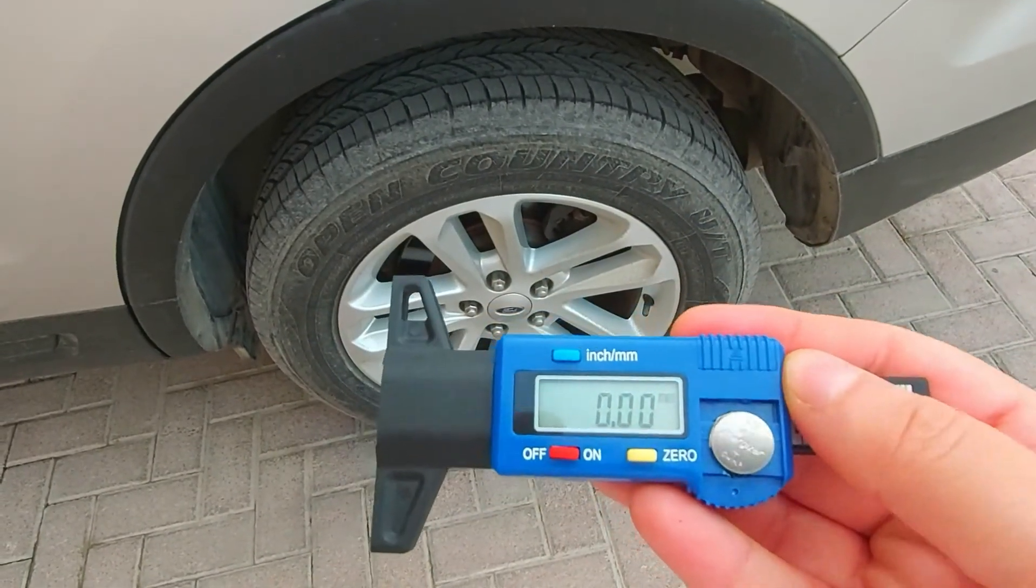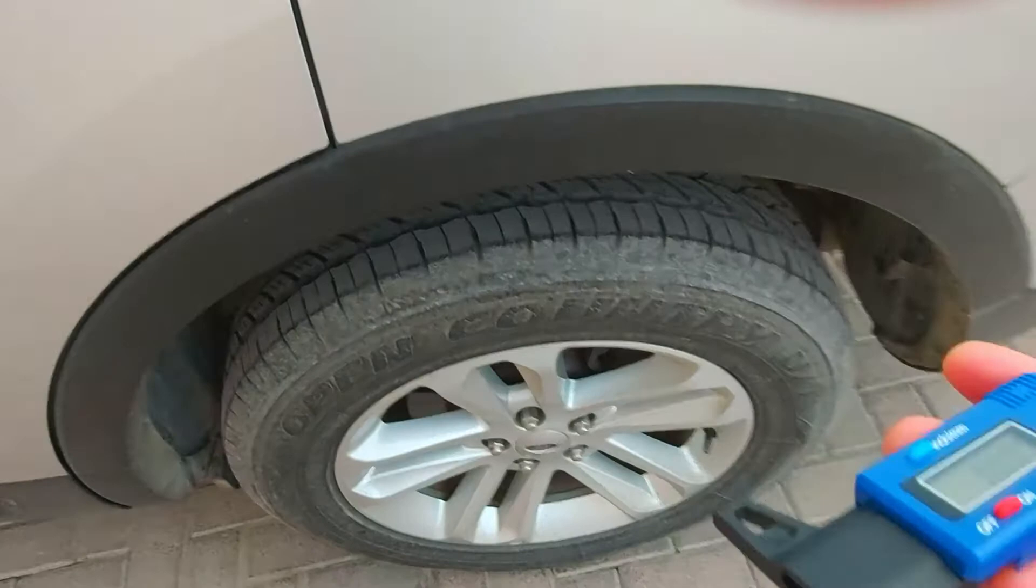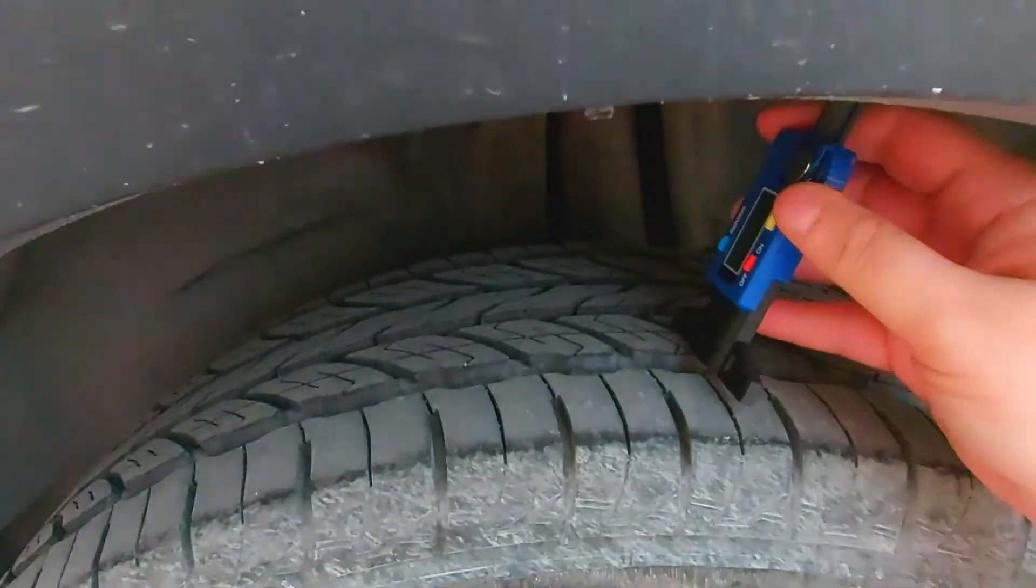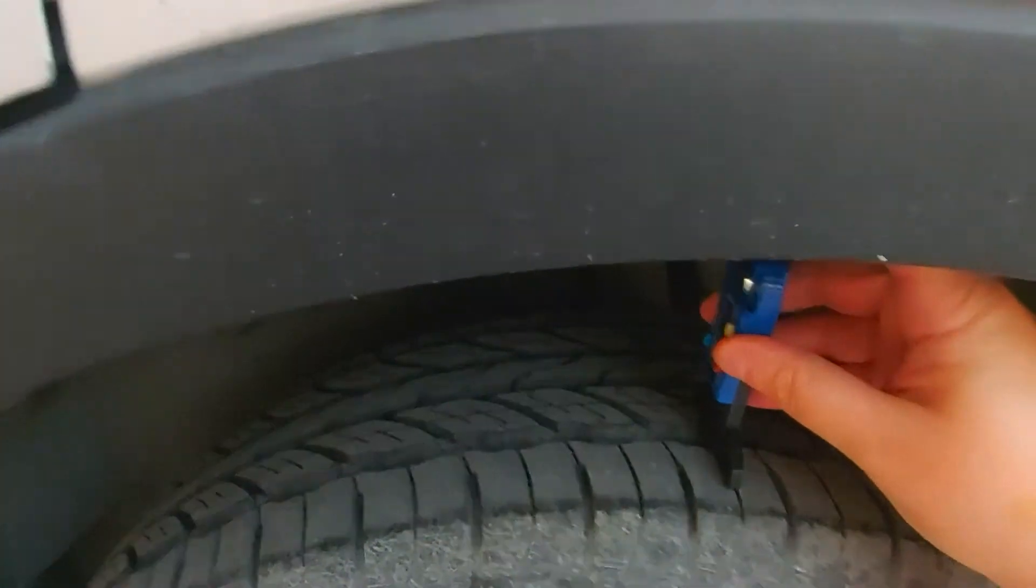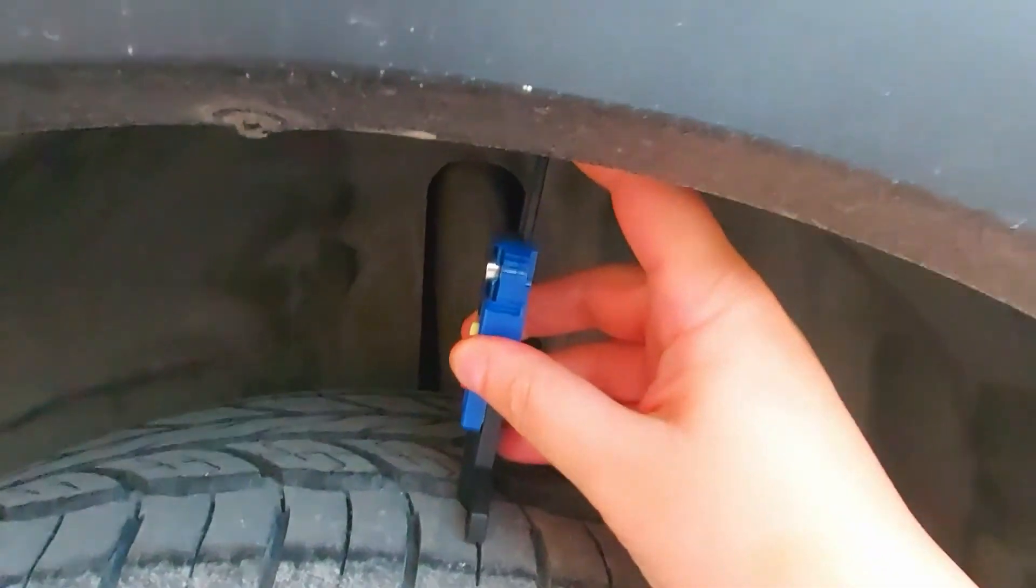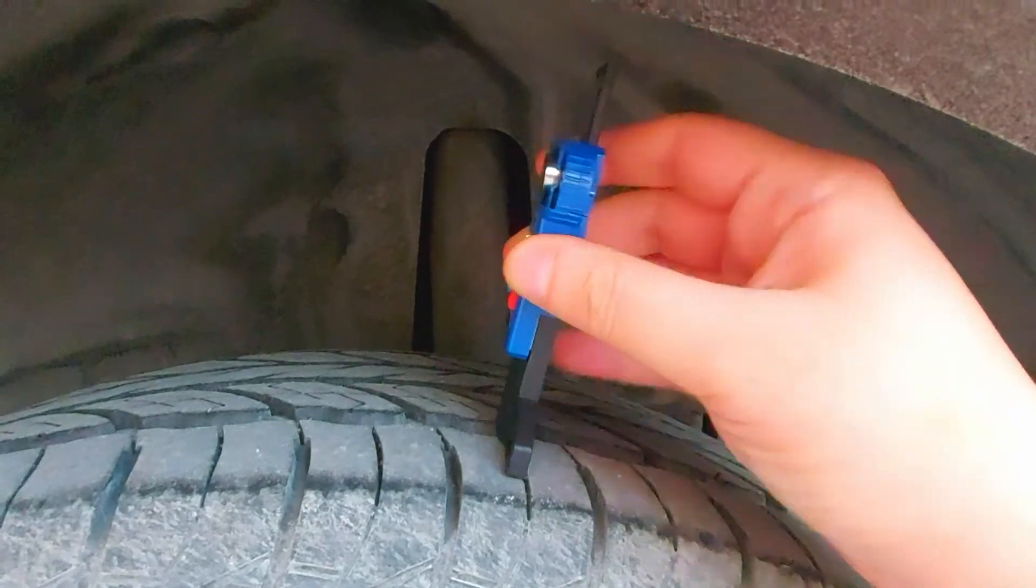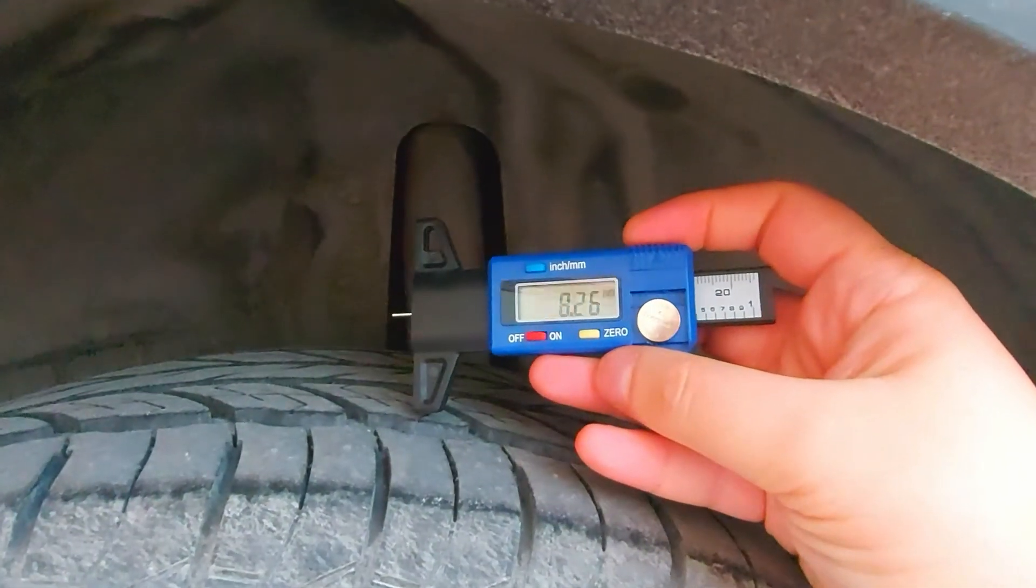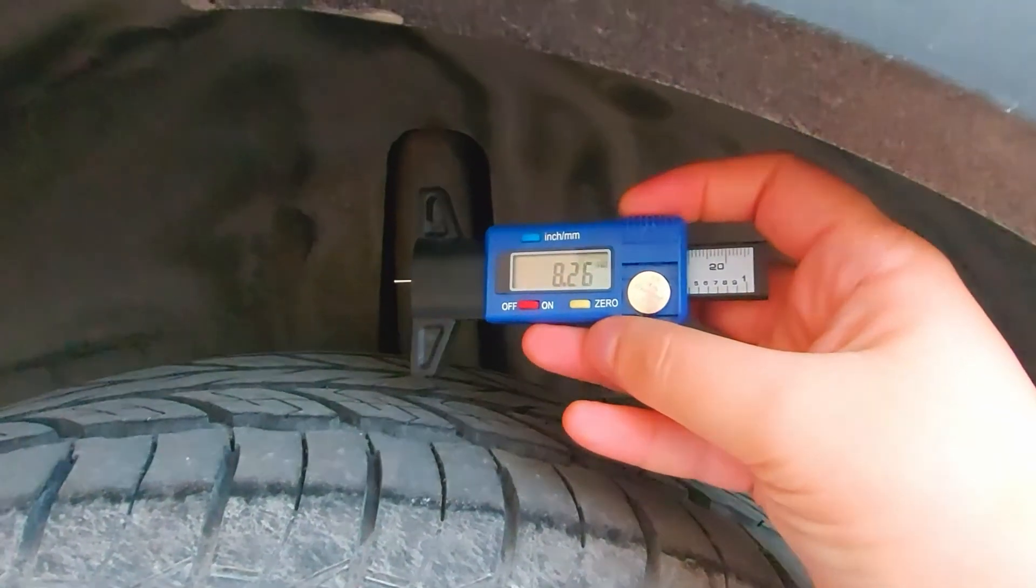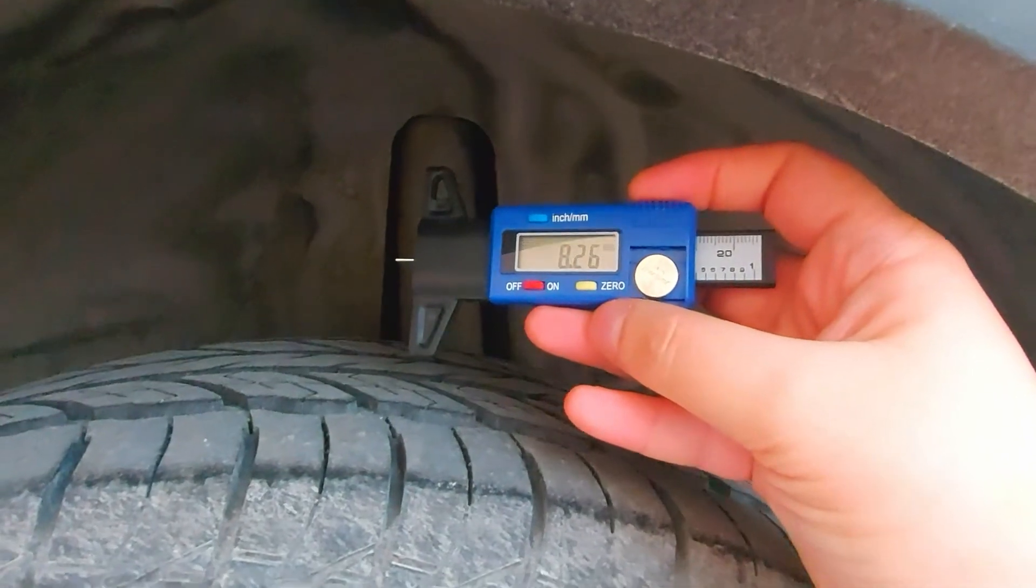You have it here full. You take the gauge like this and you press here until you stop, and then you have the reading. So it's 8.26 millimeters. This is a very good tire tread.